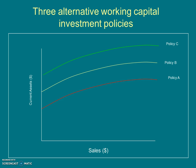Conservative firms always maintain a higher level of current assets. Policy B indicates moderate policy — as the name suggests, it does not maintain a very high nor very low level of current assets; they keep a stable, 50-50 level of current assets. Policy A indicates aggressive policy for investment in working capital. They arrange working capital only as and when it is required, maintaining a very lower level of current assets.